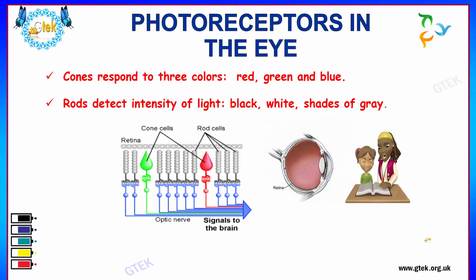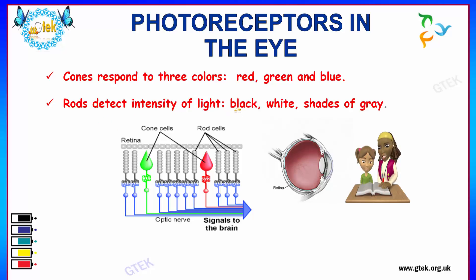Let us see about the photoreceptors in the eye. Cones respond to three colors: red, green and blue. Whereas the rods detect intensity of light, mainly focusing on black, white and shades of grey. You can see here the retina, the cone cells and the rod cells.